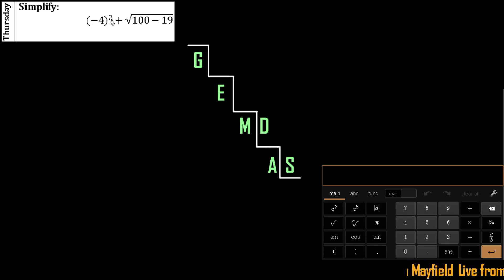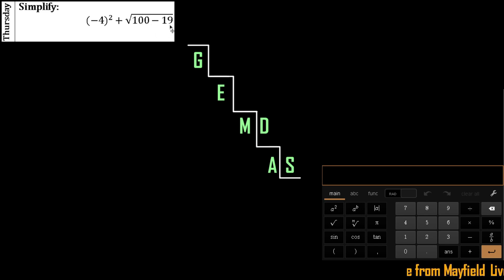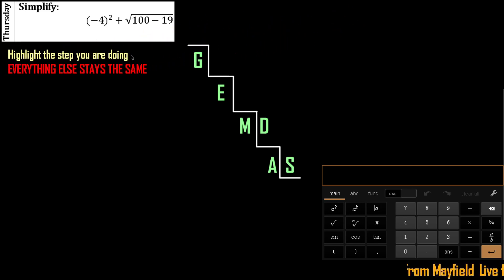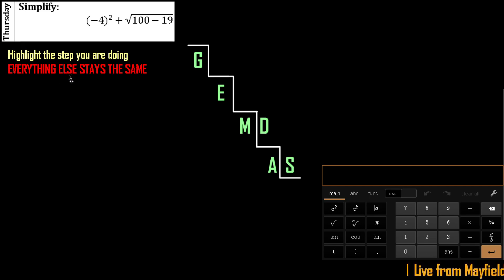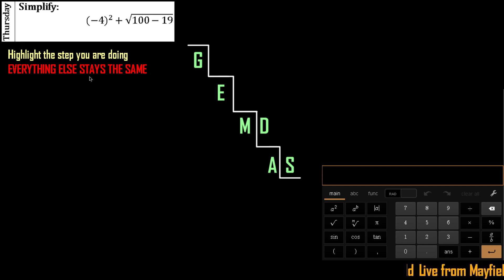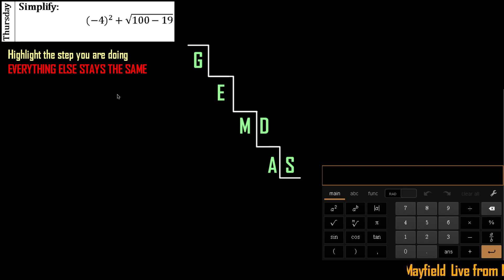We have negative 4 squared plus the quantity square root of 100 minus 19. What I do is highlight the step I'm going to do, and everything else stays the same. A lot of people try to do two steps at a time — think about walking down a staircase: the more steps you try to skip, the more likely you are to fall.